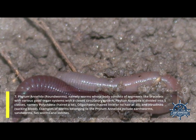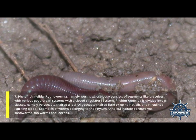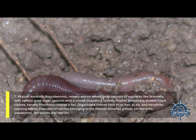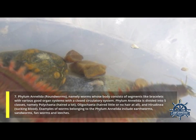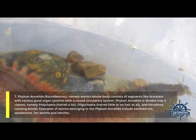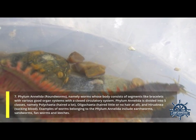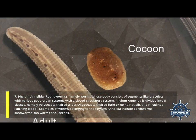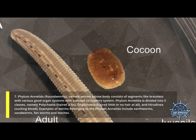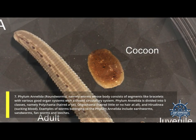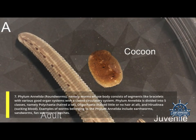Seventh, Phylum Annelida (roundworms/segmented worms) — worms whose bodies consist of segments like bracelets, with various organ systems and a closed circulatory system. Phylum Annelida is divided into five classes: Polychaeta, Hirudinea, Oligochaeta, and Hirudinea (sucking blood). Examples include earthworms, sandworms, fanworms, and leeches.